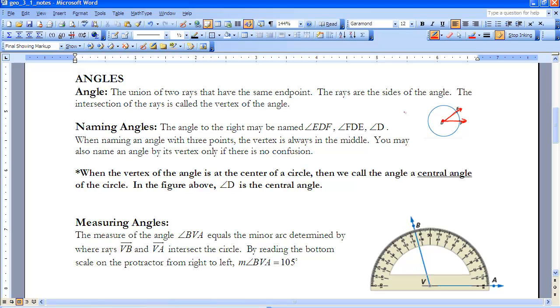When we name angles, we name them by points on each of the rays and by the vertex. So in this case, we have E as a point on the ray, F as a point on the other ray, and D as your vertex.